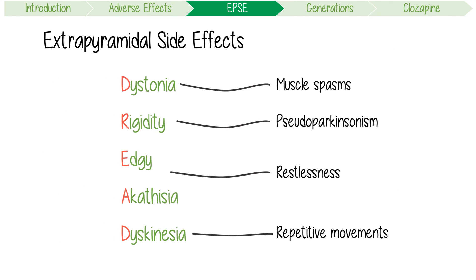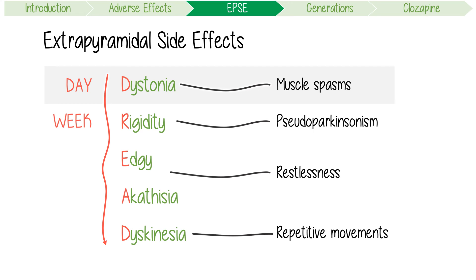DREAD works really well because it sets out these complications in chronological order. Acute dystonia will occur within days of starting antipsychotics, rigidity occurs next within weeks, akathisia has an onset within months, whereas tardive dyskinesia happens last after about one year.